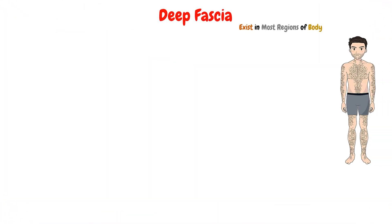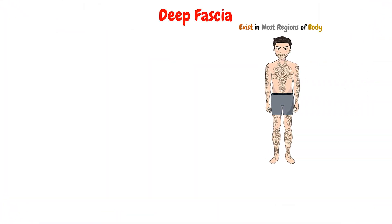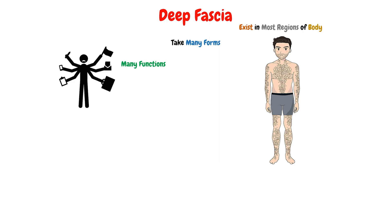After we know that the deep fascia will exist in most regions of the body, and it will take many forms, in which every form will have many functions. So if you collect the functions of all forms and all subtypes of deep fascia, it will be about 7 main functions.